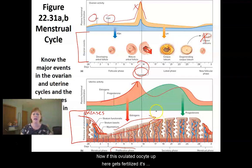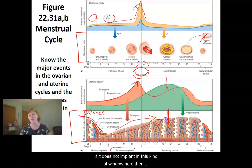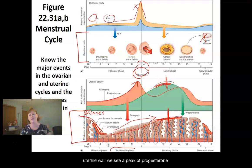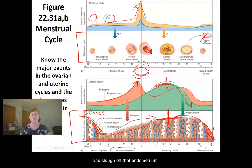Now if this ovulated oocyte gets fertilized, it's going to implant about five days after it's ovulated. If it does not implant in this window, then what happens — if we look at the green progesterone line — right about when it should implant in the uterine wall, we see a peak of progesterone. If implantation doesn't occur, progesterone levels crash and as a result, you slough off that endometrium.